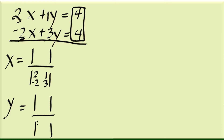The same numbers — 2, 1, negative 2, and 3 — are exactly what we're going to write down as the denominators for our y value as well.